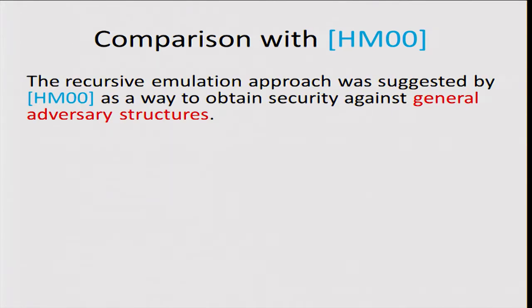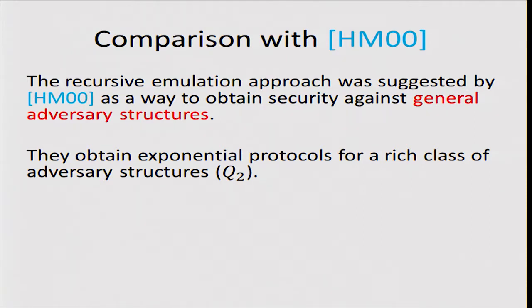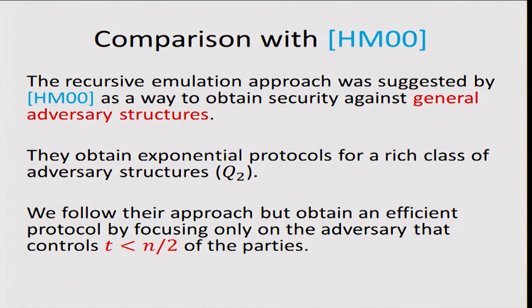Comparing with Hirten-Maurer: they introduced recursive player emulation with a different motivation — handling general adversary structures where the adversary controls sets of players rather than a threshold. They used this technique to obtain exponential protocols for a rich class of adversary structures called Q2. In particular, for the case where the adversary controls less than half of the players, their protocol is also exponential. We follow the same basic approach, but because we focus only on the threshold case, we obtain an efficient protocol.